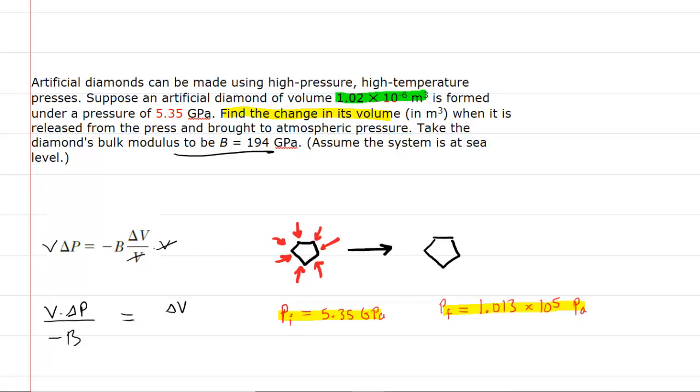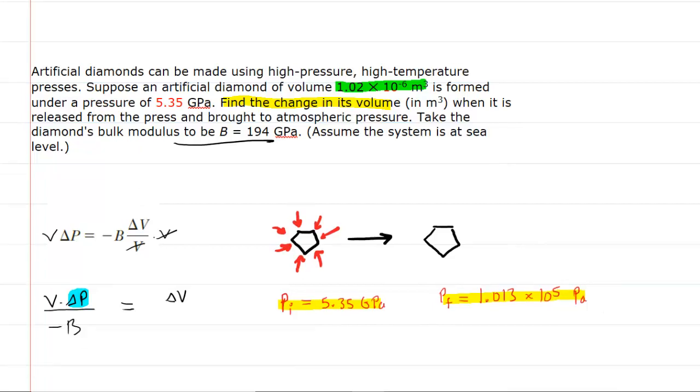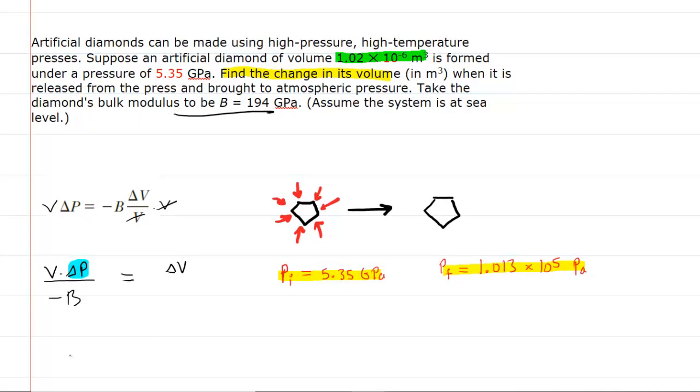We want to continue to manipulate this expression just a little further. Whenever we have the change in a quantity, that's the final value minus the initial value. So we'll rewrite it one more time as final pressure minus the initial pressure, divided by negative B. Now we are set to easily calculate the change in volume.